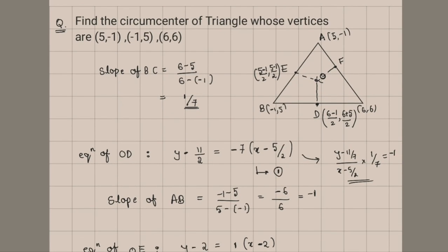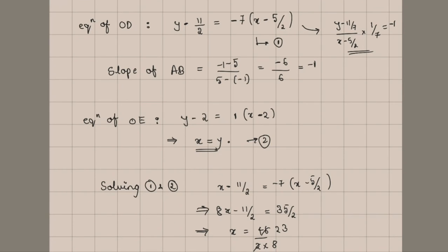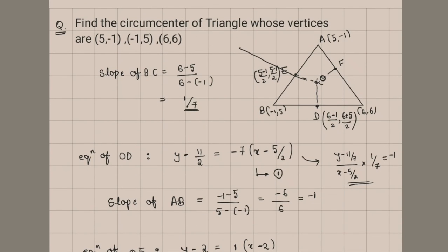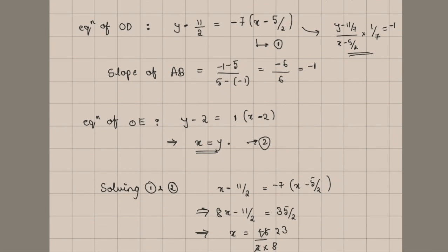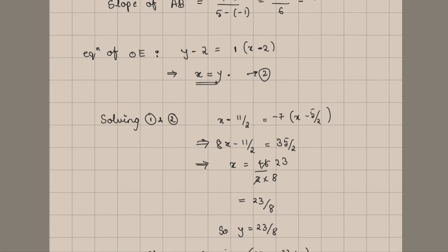There is another way of solving this question. If you observe, A(5, -1) and B(-1, 5) are mirror images with respect to the line y = x, which is nothing but the perpendicular bisector OE that we got (x = y). So by observing these two points you can directly say they are mirror images with respect to y = x. This gives one equation without solving. Then solving OD with that gives the same result: (23/8, 23/8). Thank you.